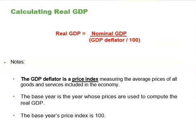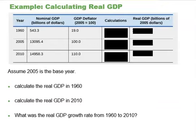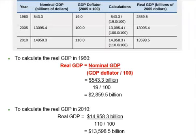Let's look at a numerical example. Assume 2005 is the base year. We will calculate real GDP in 1960 and 2010. To calculate real GDP in 1960, we take the 1960 nominal GDP of $543.3 billion, divided by the GDP deflator of 19, divided by 100. We get $2,859.5 billion. Doing a similar calculation, real GDP in 2010 is $13,598.5 billion.